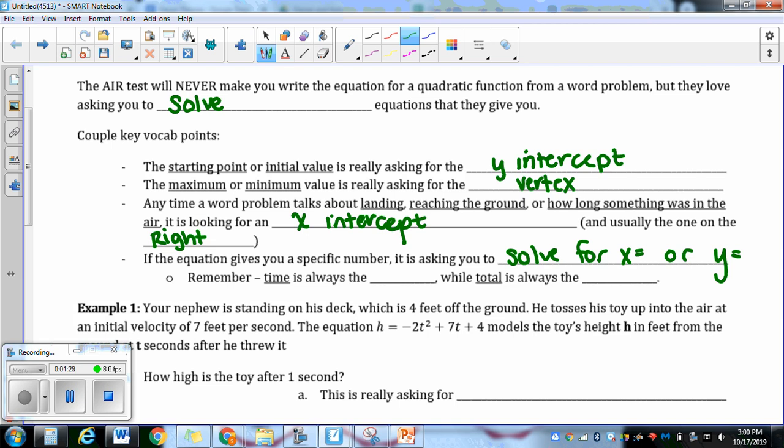Just as a quick reminder, time is always x, total is always y. So if it asks you after six seconds, that is a time measurement, so you would do x equals. If it asks you a total of $28, that is a total, so it would be y equals.